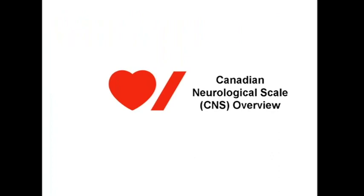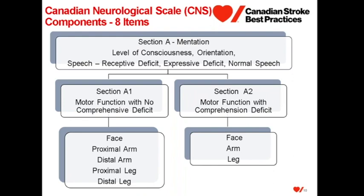I will now provide an overview of the Canadian Neurological Scale. It is divided into two parts: Section A, Mentation, and Section 2, Motor Function Testing. Section A, Mentation, looks at level of consciousness, orientation, and speech. Section 2, Motor Function, assesses impairment of the face, arm, and leg using a weighted scale. These items were chosen based on the prevalence and functional impact on stroke.